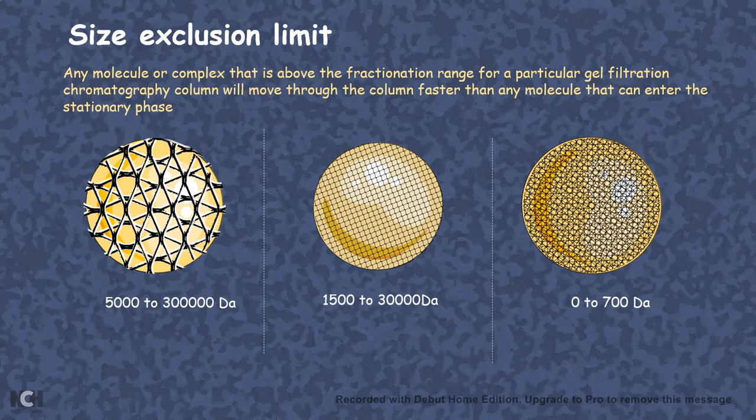Whereas anything above 700 dalton cannot enter the bead. So based on the differential mobility, based on how proteins enter the bead or they don't enter the bead, we can get a size exclusion of these proteins.